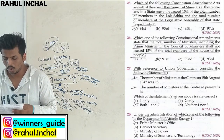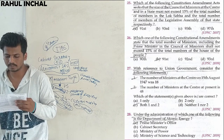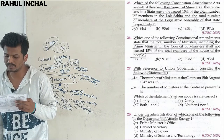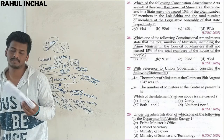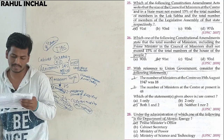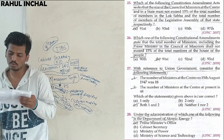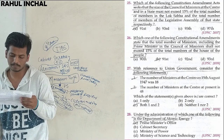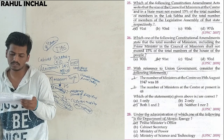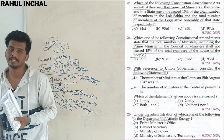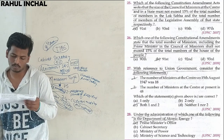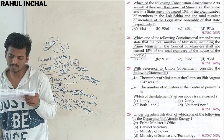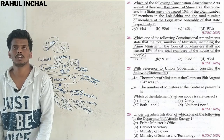Which constitutional amendment states that the total number of ministers including the Prime Minister shall not exceed 15%? Again, that is the 91st Amendment. Regarding the number of ministers: on 15th August 1947 the number of ministers at the Centre was 18, and the current number of ministers at the Centre is 48. Both statements are correct.